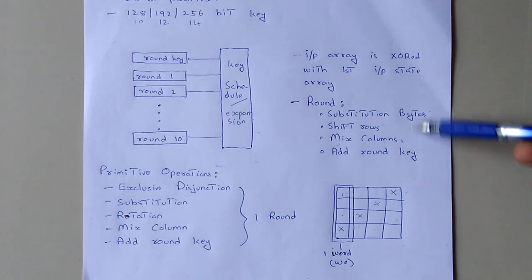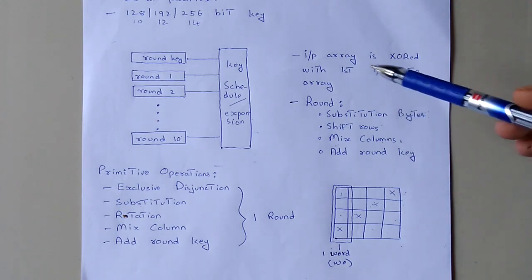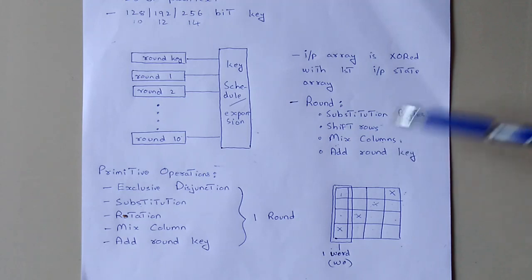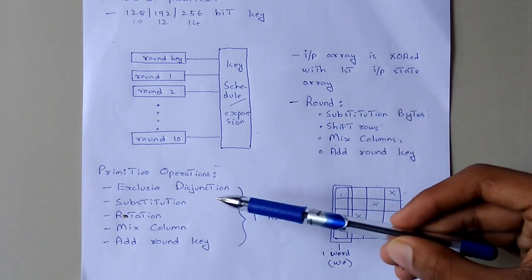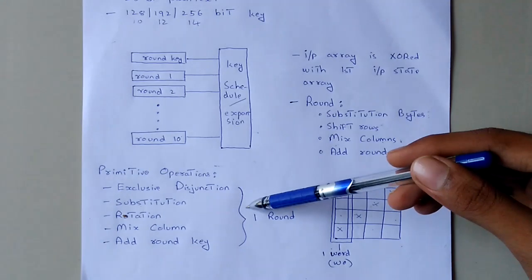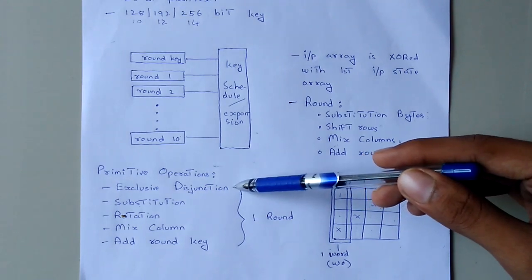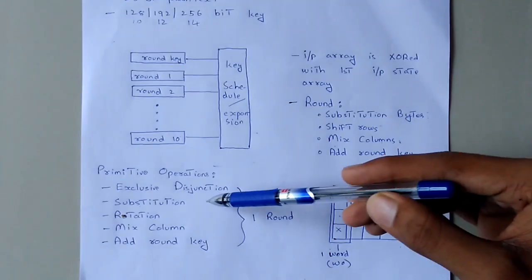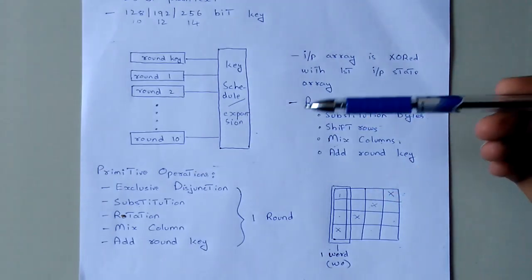Finally, we add a round key — this is the AddRoundKey step, and it is the main reason for the security of AES. The primitive operations in AES are: XOR (exclusive OR), SubBytes, ShiftRows, MixColumns, and AddRoundKey. These are the main operations.